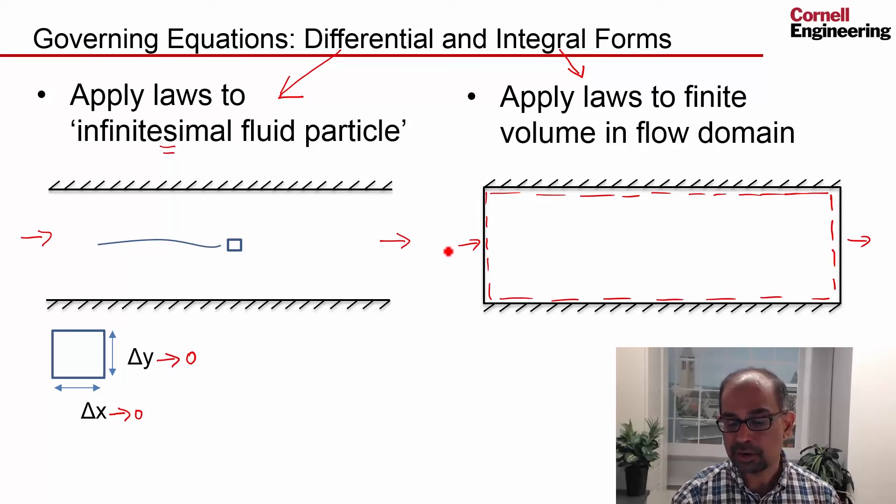I can say that the mass coming in plus the mass accumulating should be equal to the mass going out. That's kind of an aggregate view of mass conservation. And if there is no mass accumulating within this volume, then the mass going out should be equal to the mass coming in.